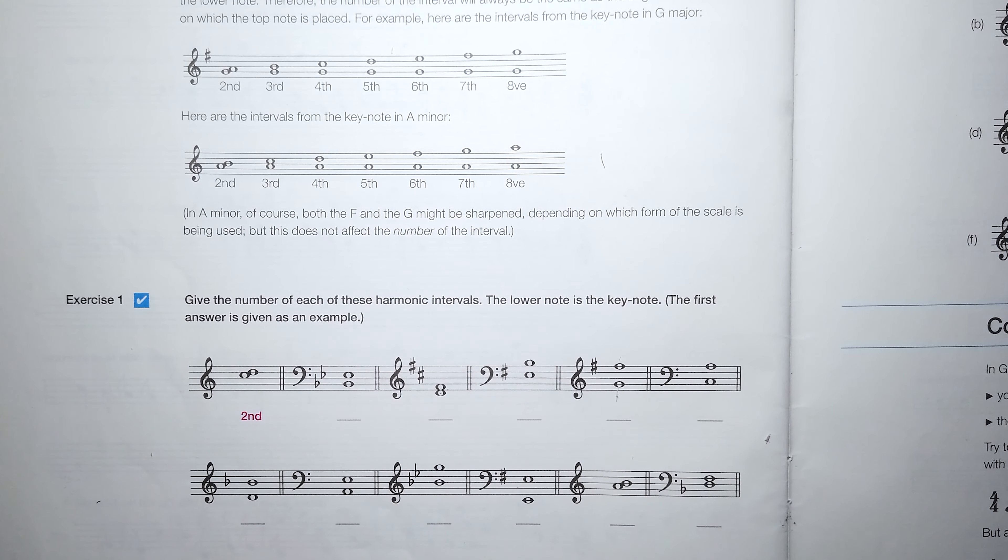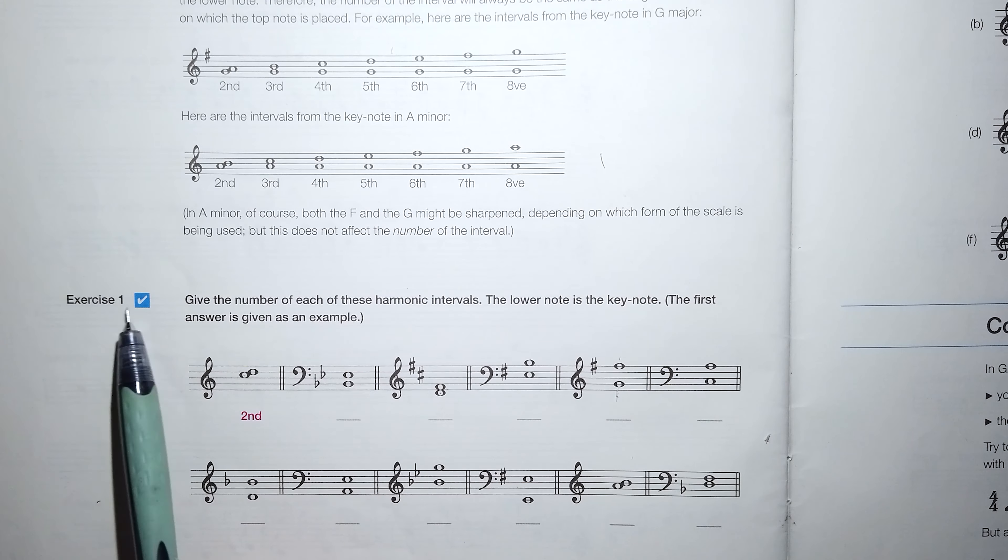Now we will try to work with the exercises. In the first exercise, we have to give the number from the lower to the upper note and count. For example, the first we can see is a second. Next one: one, two, three, four—fourth. One, two, three—third. One, two, three, four, five—fifth. One, two, three, four, five, six—sixth. And so on. Please continue the next line.